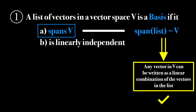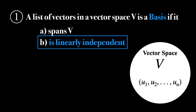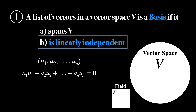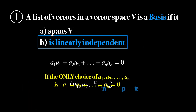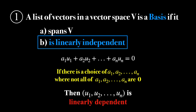Next up is linear independence. Consider a list of n vectors taken from a vector space, and consider the equation where a1, a2, all the way up to an are scalars, free to be chosen from the underlying field of the vector space. Then if the only way to satisfy this equation is by choosing each of these scalars to be zero, that means the list is linearly independent. But if there is a way to satisfy this equation where at least one of the scalars is not equal to zero, then the list is called linearly dependent.